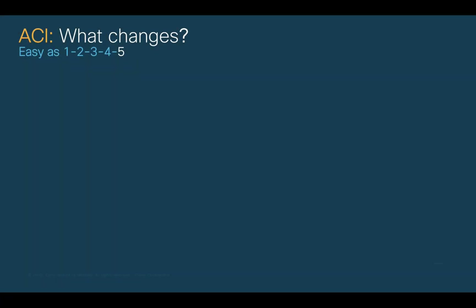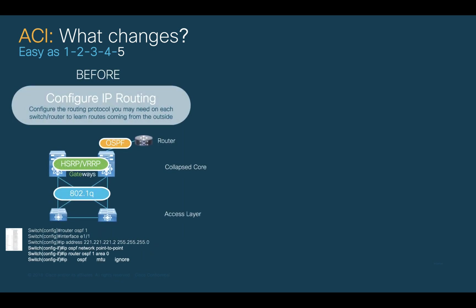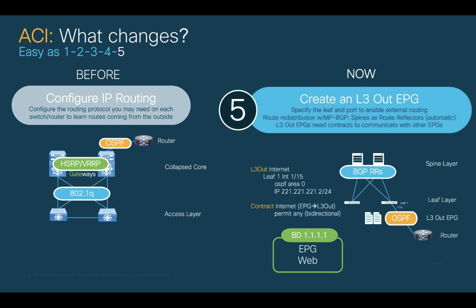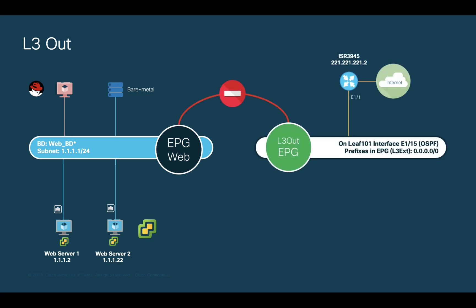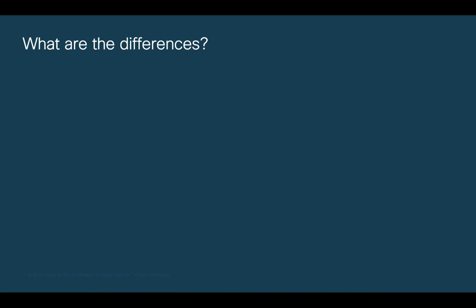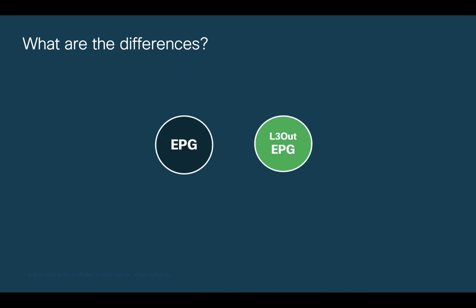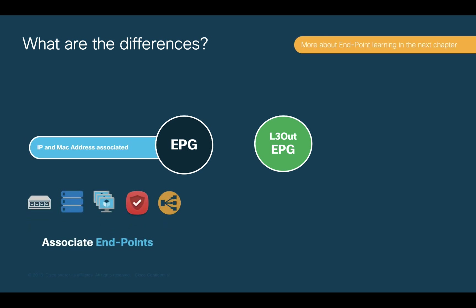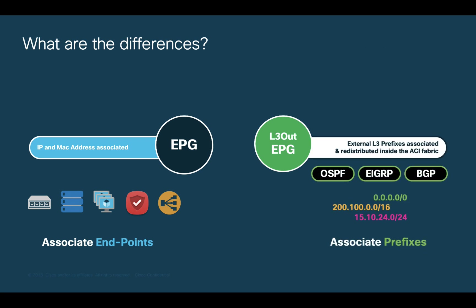Finally, Step 5. Before, we would configure a given interface with a routing protocol to peer with another router to provide external layer 3 connectivity. Now with ACI, we do it by creating an EPG called L3OUT. We configure L3OUT EPGs by selecting an interface, subinterface, or SVI, as well as the routing protocol to run on a given leaf. Then, if we want the L3OUT EPG to communicate with any other EPG, we will have to create a contract. For example, if we wanted the web servers in the web EPG to talk to the internet, we would need a contract between the web EPG and the internet L3OUT EPG. The key difference: IP and MAC addresses known as endpoints are assigned to EPGs, while learned prefixes from external connections are assigned to L3OUT EPGs. Just remember a contract is needed for communication between both worlds.